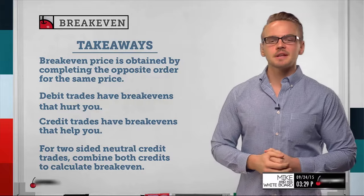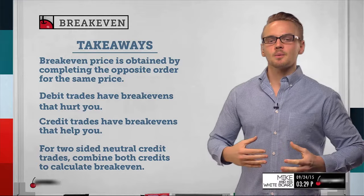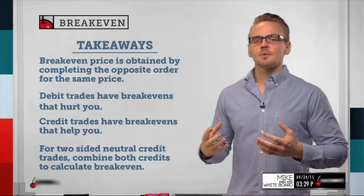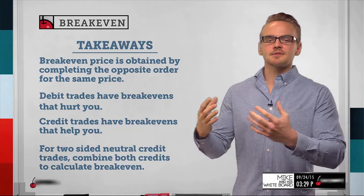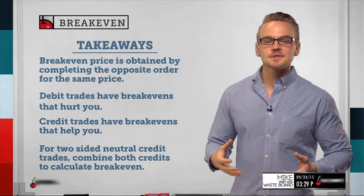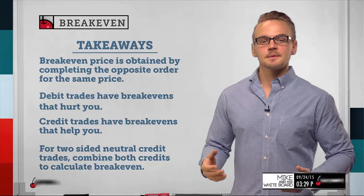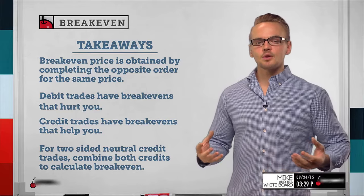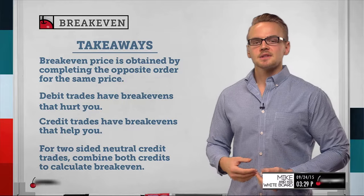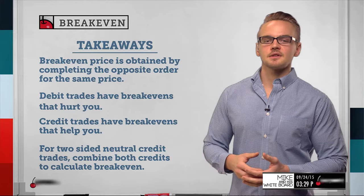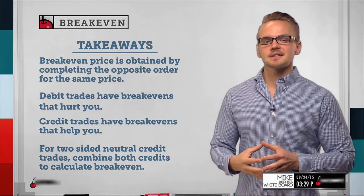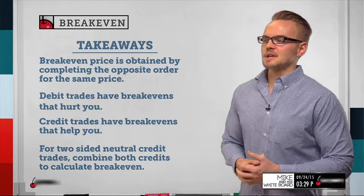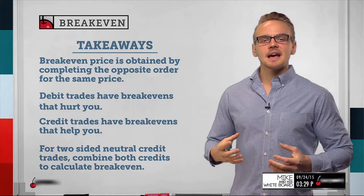Key takeaways for break-even: a break-even price is obtained by completing the opposite order for the same price. In all these examples, take into account what you sold or bought the position for and figure out what needs to happen with the stock price to sell it for the same amount. With rolling, if I sold a put for $0.50 and rolled it into the future for another $0.10, I take the total credit of $0.60 and know I need to close my position for $0.60 to break-even on the entire trade.